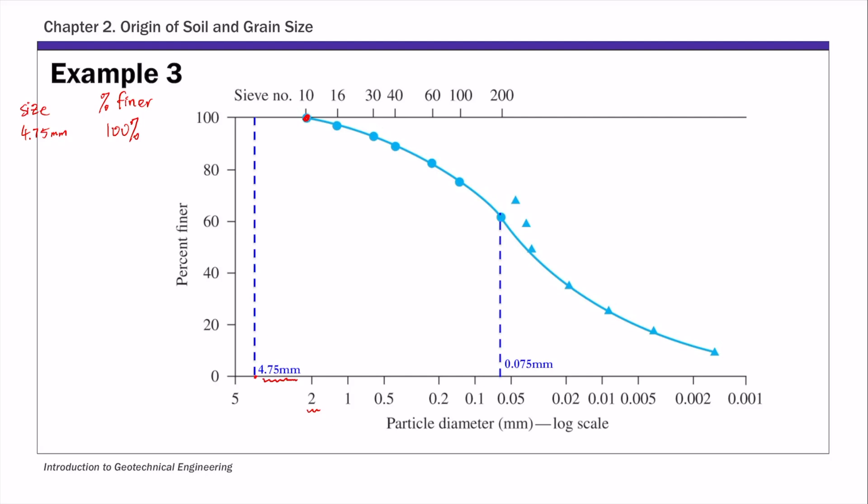This means the percentage of gravel - remember gravel is anything larger than 4.75 millimeters - so for this case, it's 100% minus 100% finer than 4.75 millimeters, which equals 0%. So there's no gravel in this soil sample.